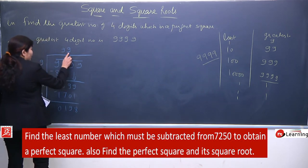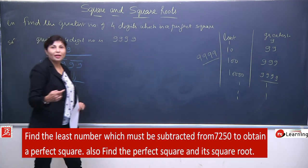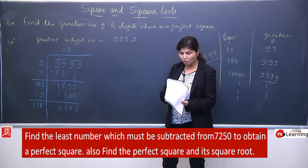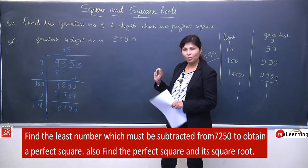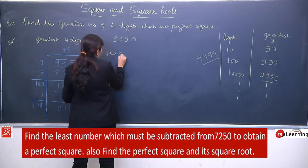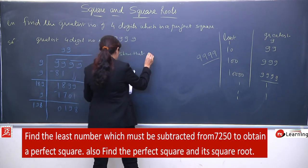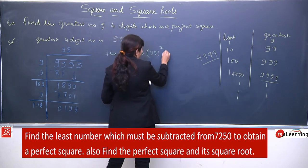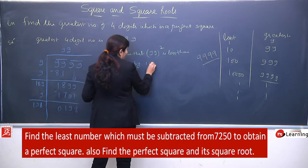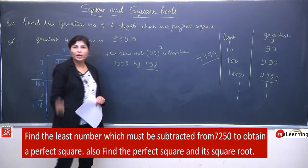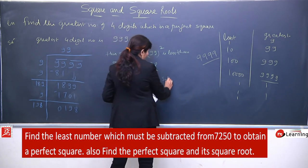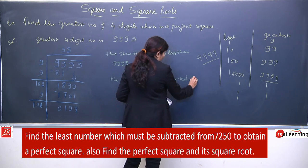198 jo hai yahan par extra hai. The least number to be subtracted is 198. 9999 mein se 198 subtract karenge. So your figure will be 9801. Means 4-digit ka greatest number jo hota hai, that is 9801 — wohi perfect square hota hai. This shows that 99² is less than 9999 by 198.